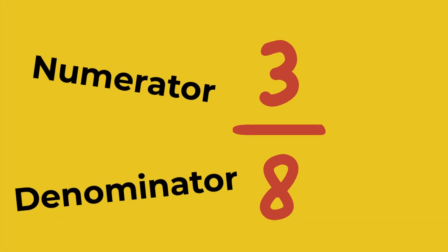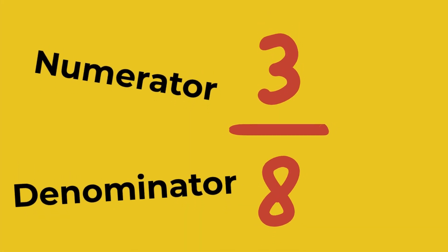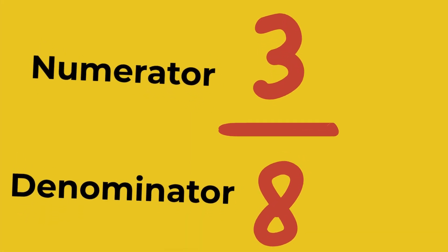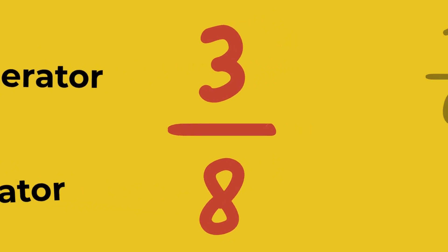Top number's the part you've got. Bottom says how many in the lot. It's called a numerator, yes! And denominator tells the rest.